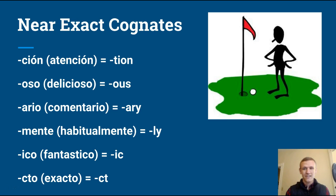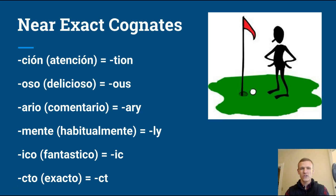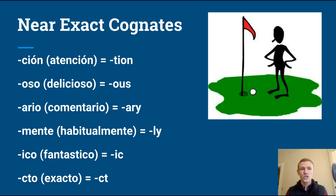The next thing I wanted to talk about is near-exact cognates. As the title implies, they are almost exact cognates. An important part of these is to start picking up on patterns. Language learning in general is all about patterns. These are really important patterns because you can use suffixes especially — and also prefixes — but here I'll outline the suffixes, which are just the endings of certain words. If you can start to understand what these are, you can figure out what a lot of different words mean without even actually knowing the meaning.